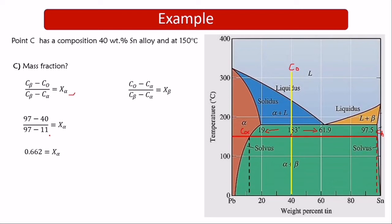We can express results as a fraction or percentage. For beta: (C₀ − Cα) / (Cβ − Cα) = (40 − 11) / (97 − 11) = 29/86 = 0.338, or 33.8%. The key check: the two mass fractions must add up to one — or 100% in percentage form. This is how we apply the lever rule.